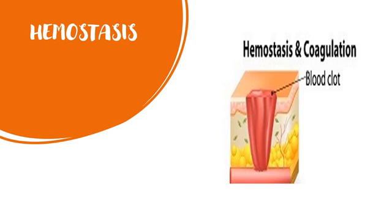When the skin is injured, either by a cut or a punctured wound, after the bleeding has stopped, a blood clot is formed within the tissue. Then a scab forms over the wound area.